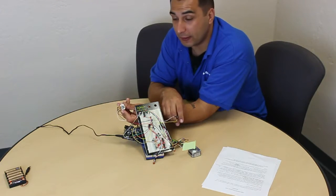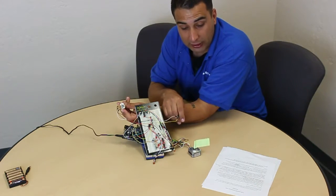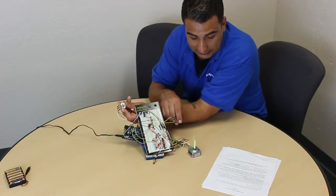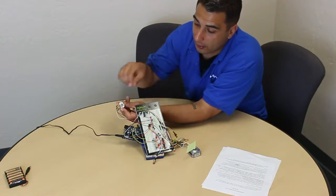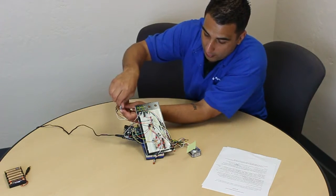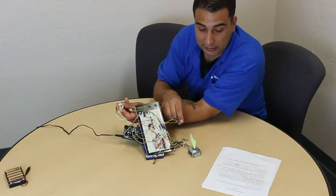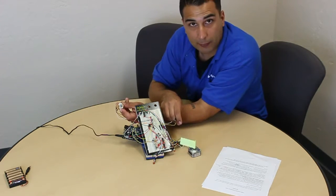By using a potentiometer in this circuit we're also able to adjust the speed of the motor. As you can see it's turning very slowly right now and by reducing the resistance with the potentiometer we're able to speed up the motor control.